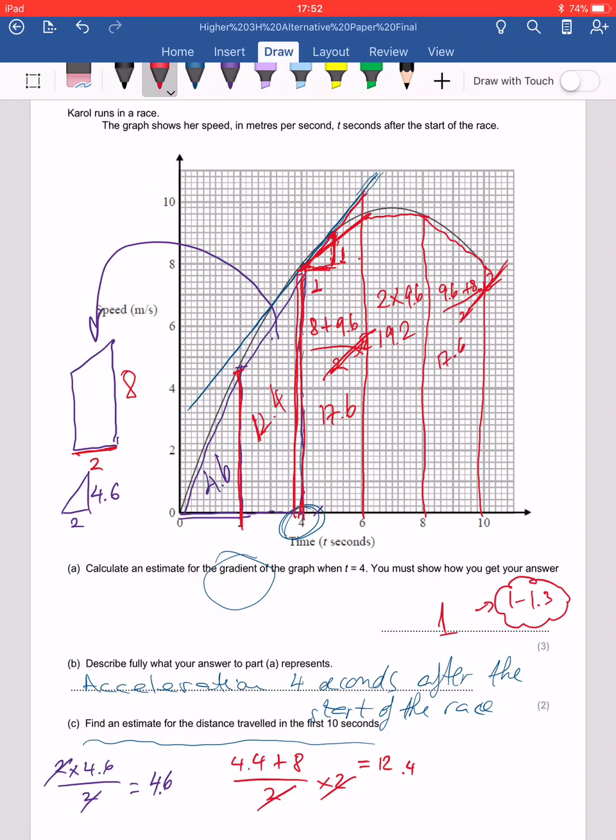Now I'm going to add mine up, and you guys add yours. So 4.6 plus 12.4 plus 17.6 plus 19.2 plus 17.6, and I get 71.4.